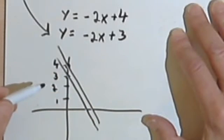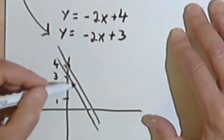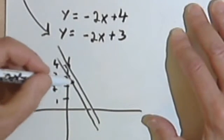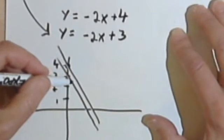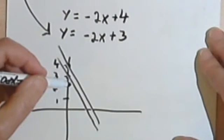Well, if they both have the same slope, then I'm going to end up with two parallel lines. If I have two parallel lines, these lines will never cross, and therefore I'm going to have no solution.